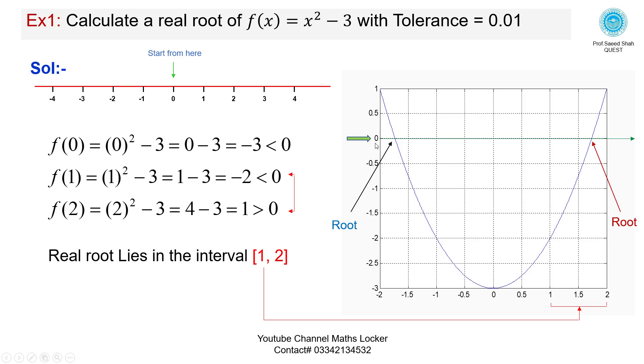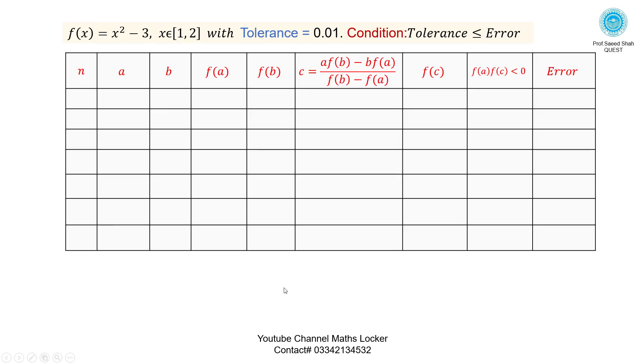On the MATLAB graph, here is the x-axis marked on the left hand side at 0. Here is a real root lying in the interval 1 and 2. Table: Number of iteration, A, B, F of A, F of B, C calculated by this formula, F of C, the product F of A times F of C less than 0, and error.